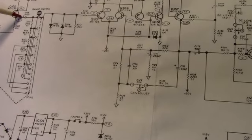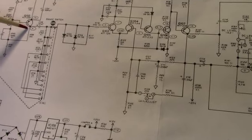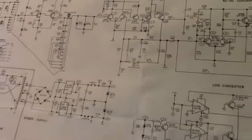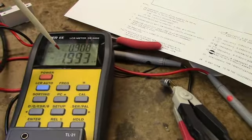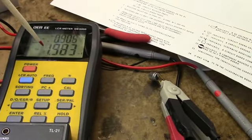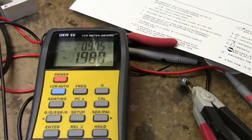Here's C106, an electrolytic from the collector of Q102 over to the range switch. Right now it's measuring 1.9 nanofarads, so that's definitely a bad cap. I'll replace that.